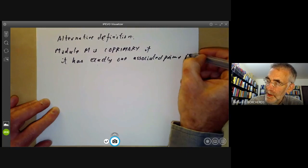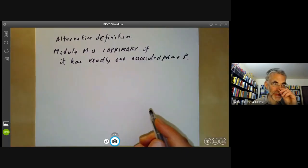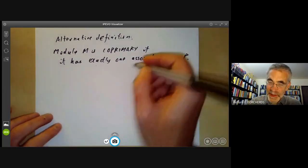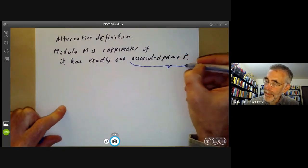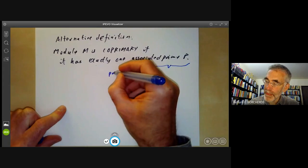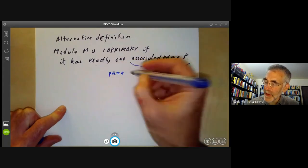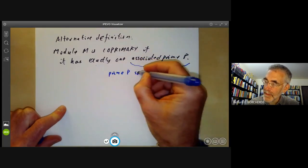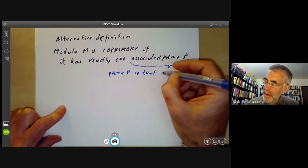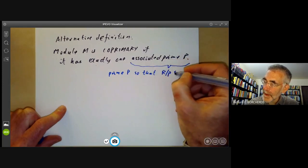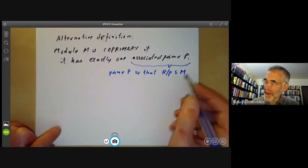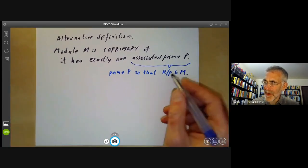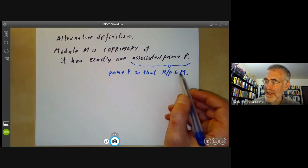Well, an associated prime is a prime ideal so that R/p is isomorphic to a submodule M. Saying R/p is contained in M is not strictly speaking correct; it's not really a submodule of this, so this is slightly sloppy notation.